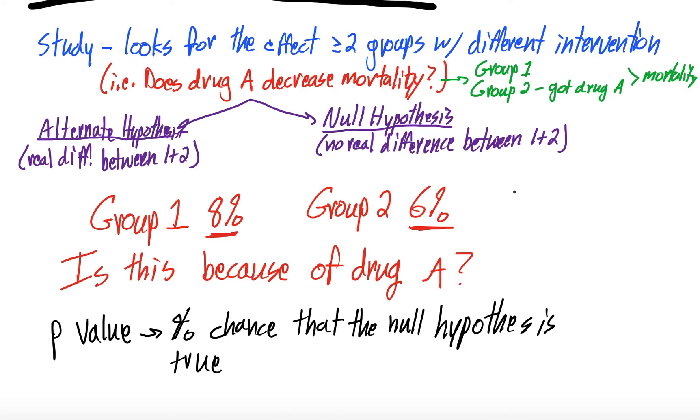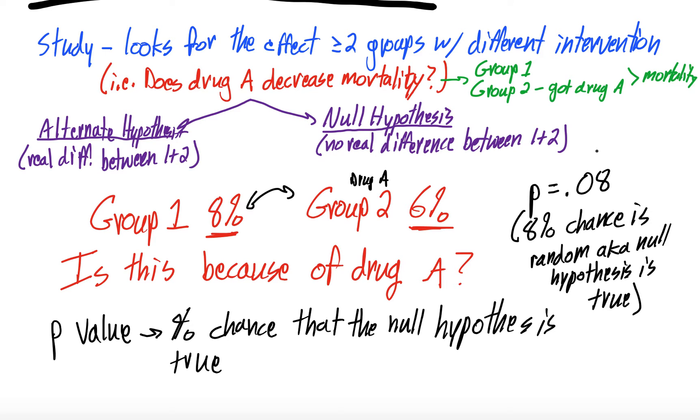So what does this look like? Let's say for this study, comparing these two groups where group two got drug A, let's say they compared these two groups and the p-value was 0.08. What this actually means is that there's an 8% chance that this difference is random, a.k.a. that the null hypothesis is true. Does that make sense? So the p-value is an actual percentage, right? So 0.08, times 100, 8% chance that the null hypothesis - being that there's no real difference between these two groups - is true, and that the difference we're seeing is just random chance, it's not because of drug A.